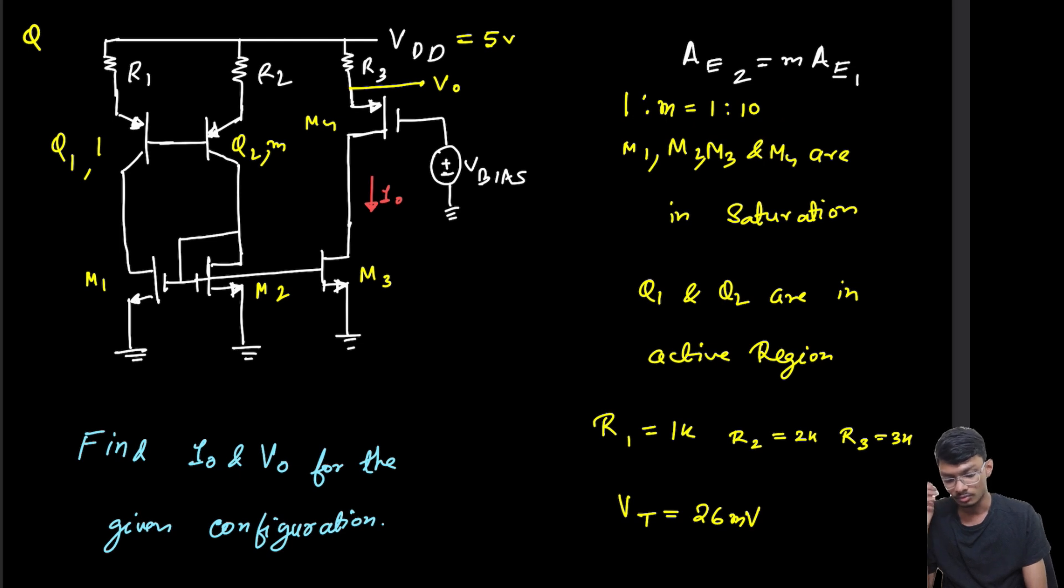The question also states that M1, M2, M3, and M4 are all in saturation, and Q1 and Q2 are in active region. Basically, it states that all of the MOSFETs and BJTs are in their active region.